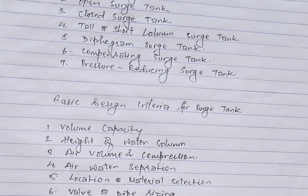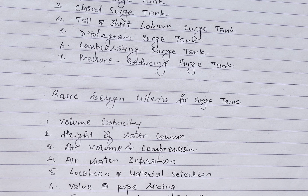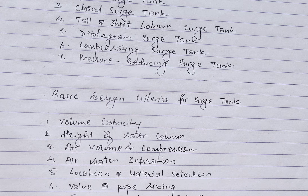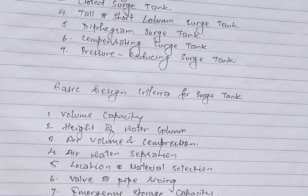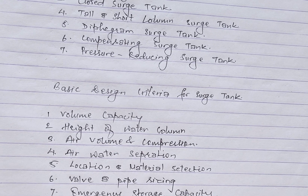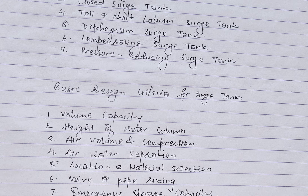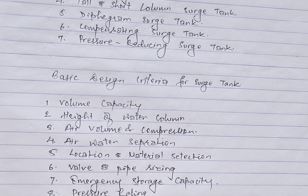Next is valve and pipe sizing: the inlet and outlet pipes and associated valves must be properly sized to ensure smooth fluid flow into and out of the source tank, minimizing resistance and pressure losses. Emergency storage capacity is a major factor: in water supply systems, source tanks shall be designed to provide emergency storage capacity, allowing temporary supply during peak demand and interruption in the water source.